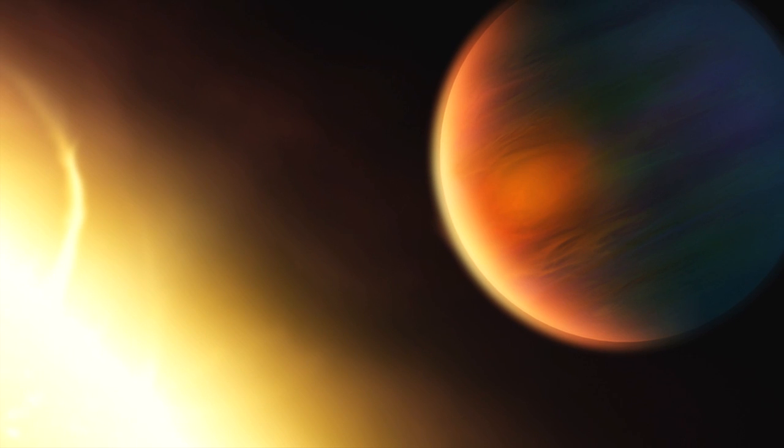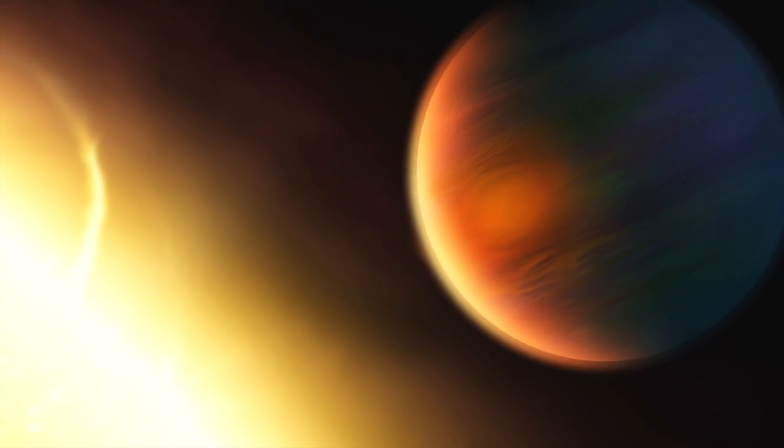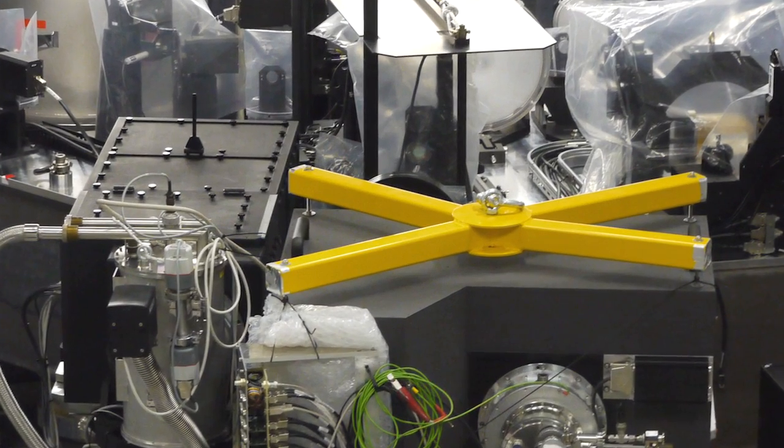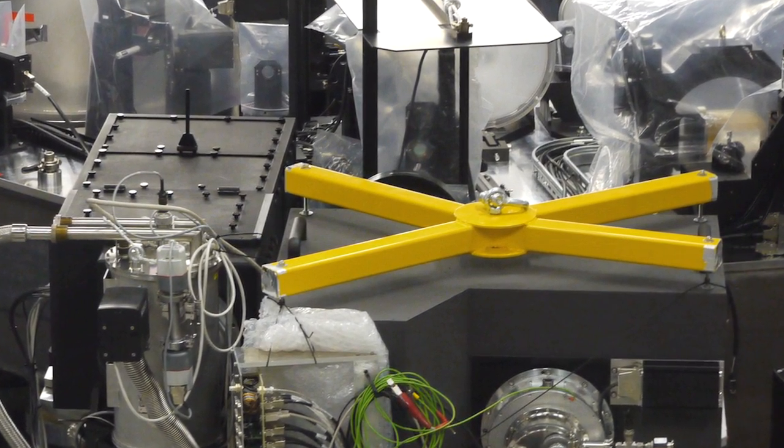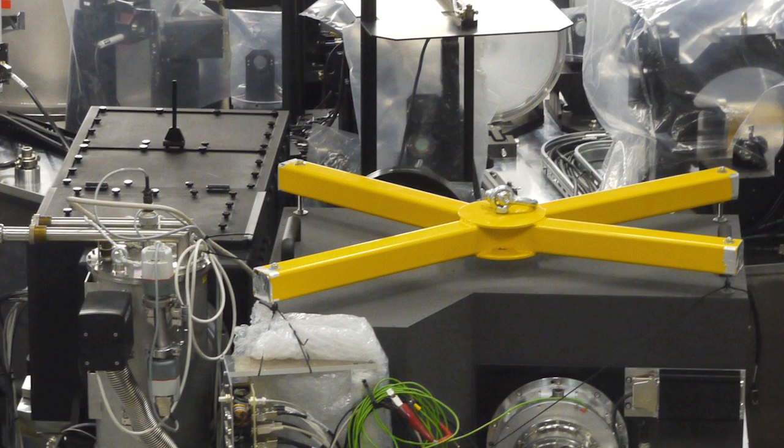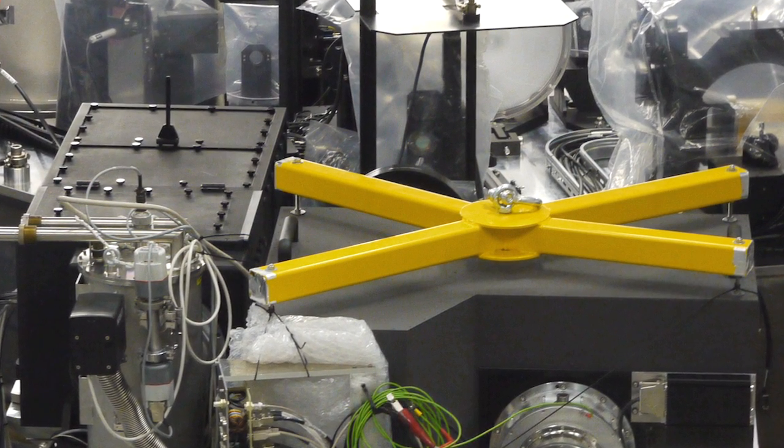Gas giants and sauna worlds are inhospitable to life, but the hunt is not over yet. Soon, the new Sphere instrument will be installed at the VLT. Sphere will be able to spot faint planets in the glare of their host stars.